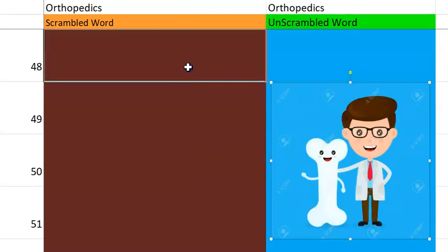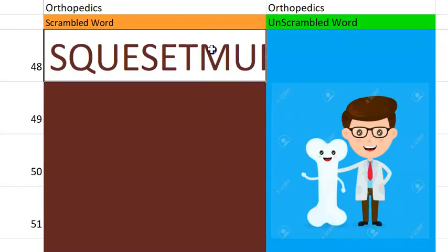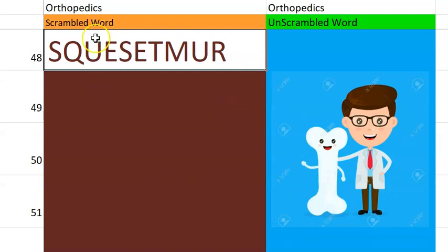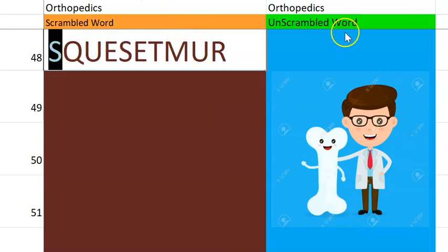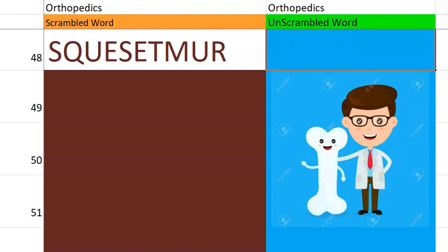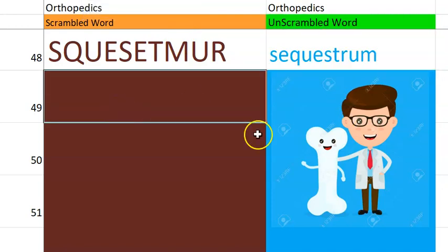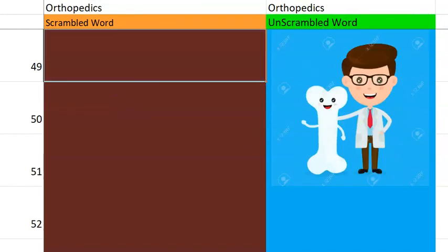Now let's go to the 48th one — chronic bone infection, osteomyelitis. You will see sequestrum. Very good.